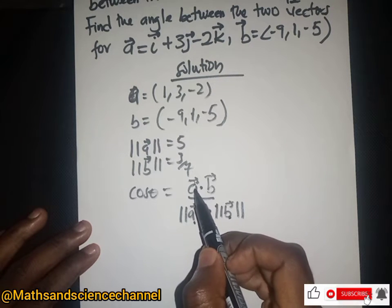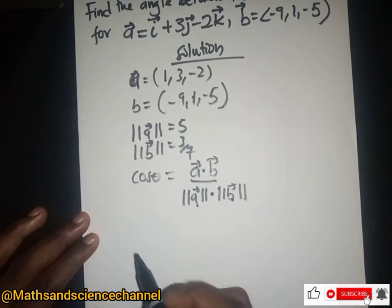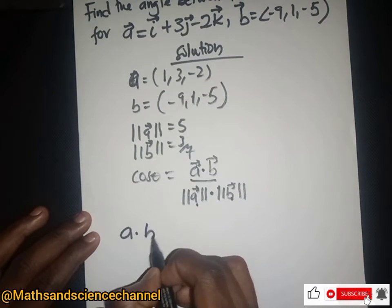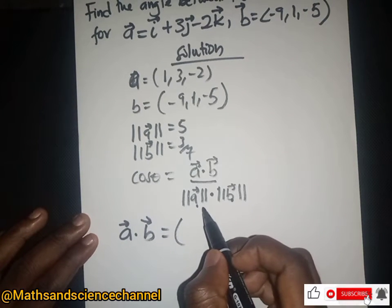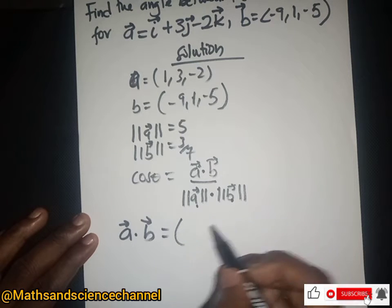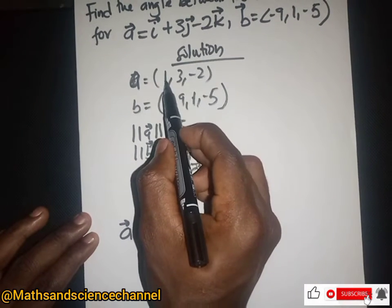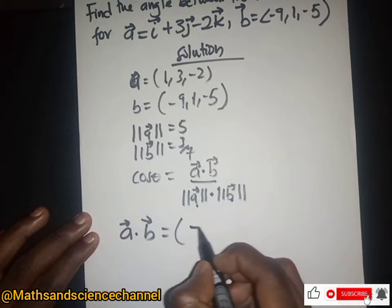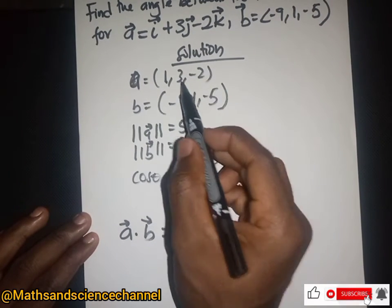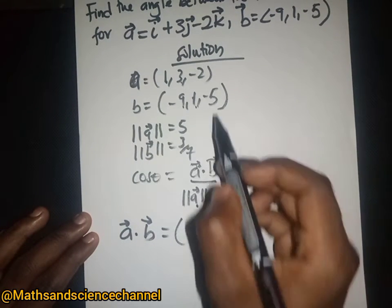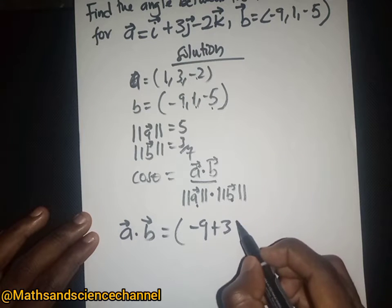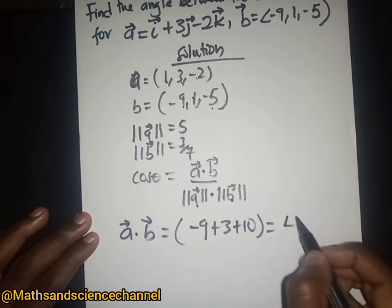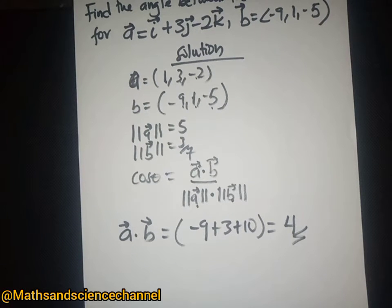To find the dot product of vector a and vector b, we multiply them component-wise and sum them up. So we have: 1 × (-9) = -9, plus 3 × 1 = 3, plus (-2) × (-5) = +10. When we sum them up we get 4, so the dot product of vector a and vector b is 4.